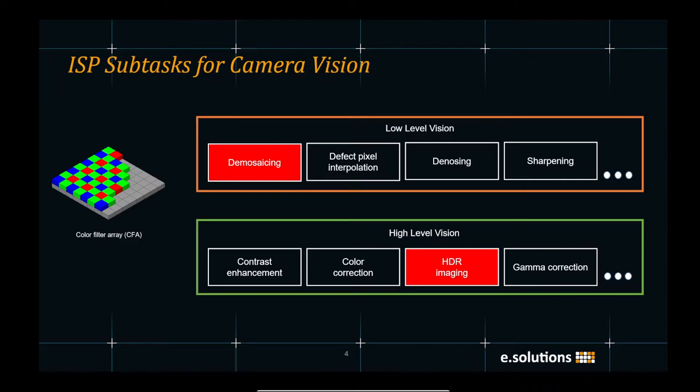The camera sensor records one color channel per pixel. This is because of the color filter array that is placed onto the sensor as shown in the figure on the left.